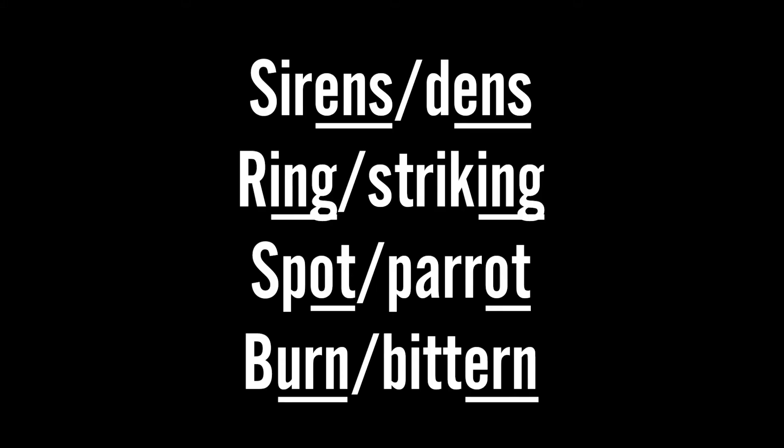First up, imperfect rhyme — the imperfect chiming of accented and unaccented syllables. Basically this means stressed and unstressed, which would be perfect if both were accented. For example: sirens and dens, ring and striking, spot and parrot, and burn and bitten.